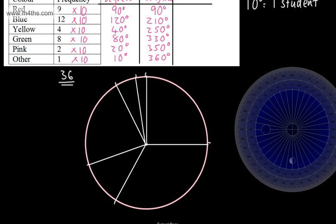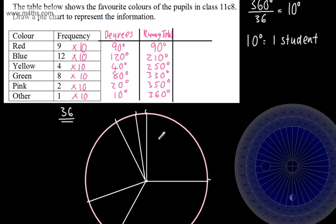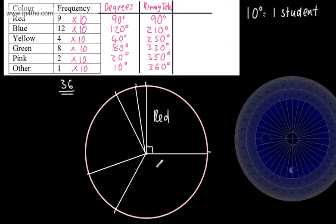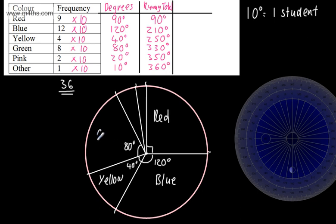Now I label the pie chart with the title 'Favourite Colours of Class 11C8.' The first sector is red at 90 degrees — a right angle. The next is blue at 120 degrees. Then yellow at 40 degrees. Then green at 80 degrees. Then pink at 20 degrees. And finally other at 10 degrees.